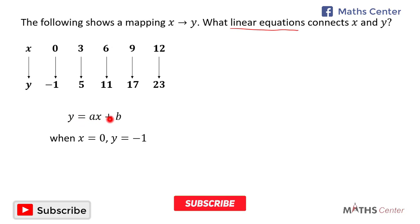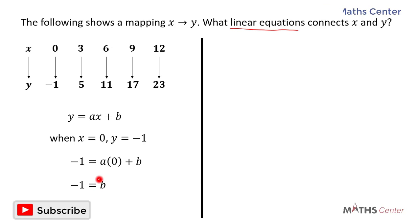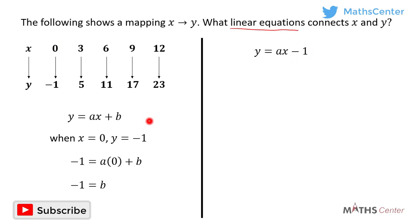y is equal to ax plus b, and when x is equal to zero, y is equal to negative one. Substituting, we get negative one is equal to a times zero plus b. A times zero gives us zero, so b is equal to negative one. Our rule is now y is equal to ax minus one.